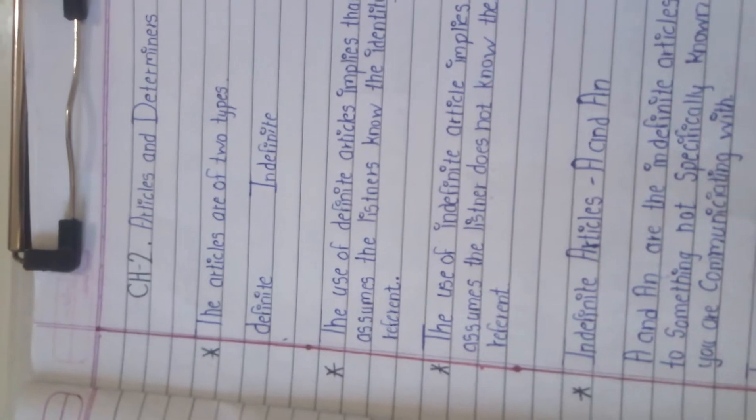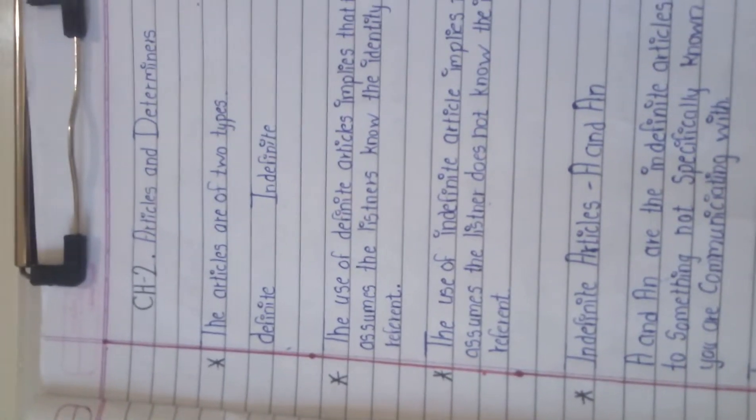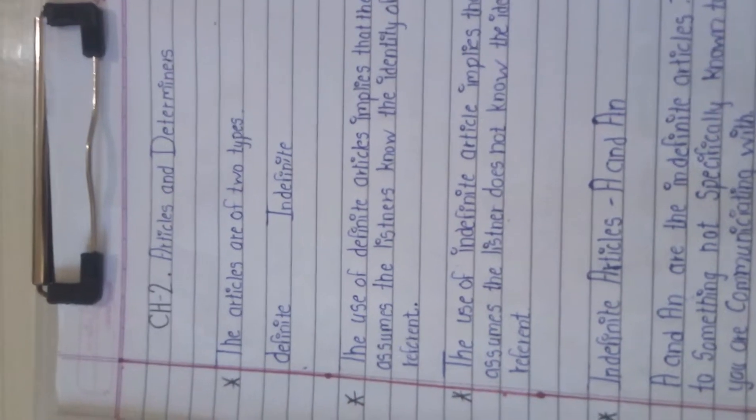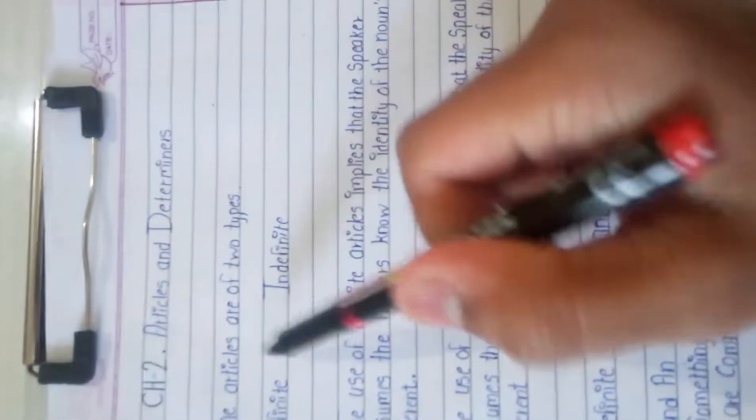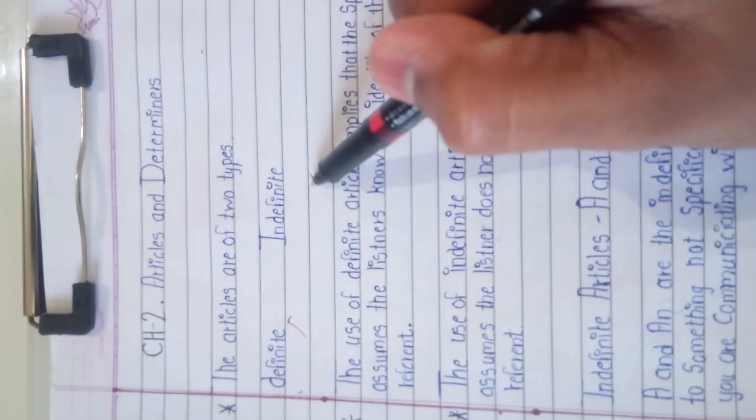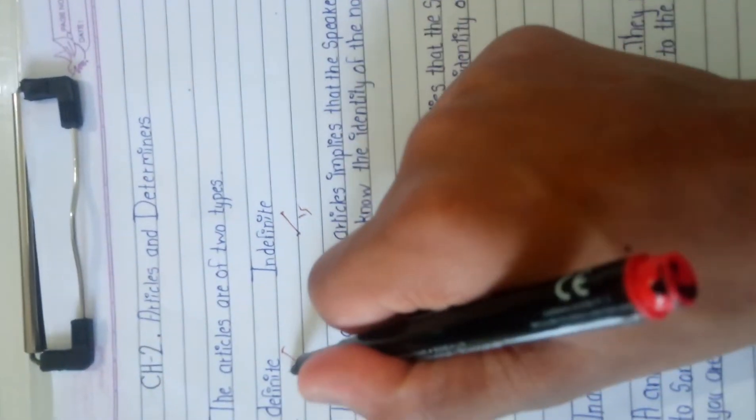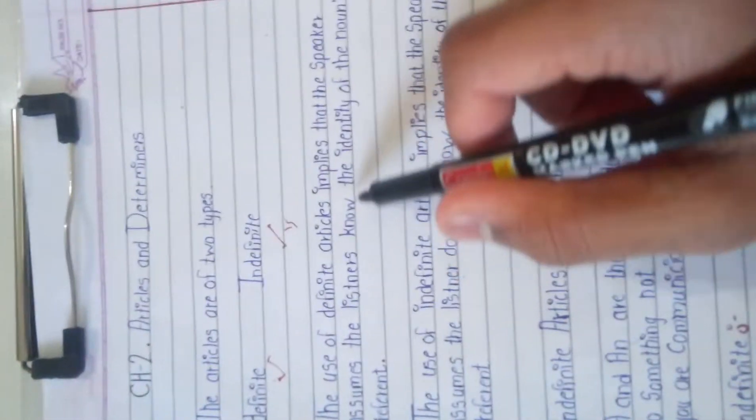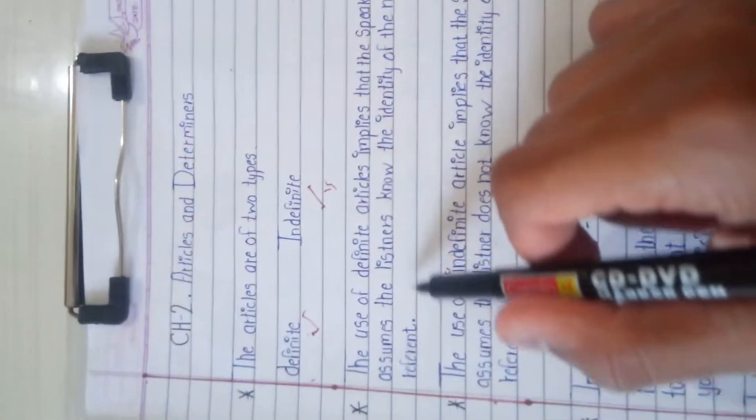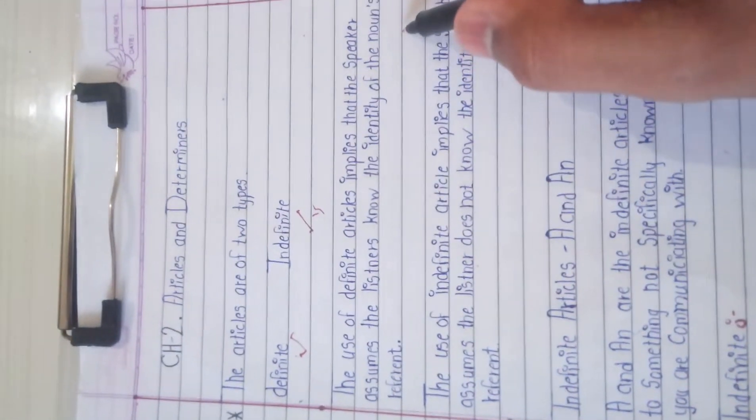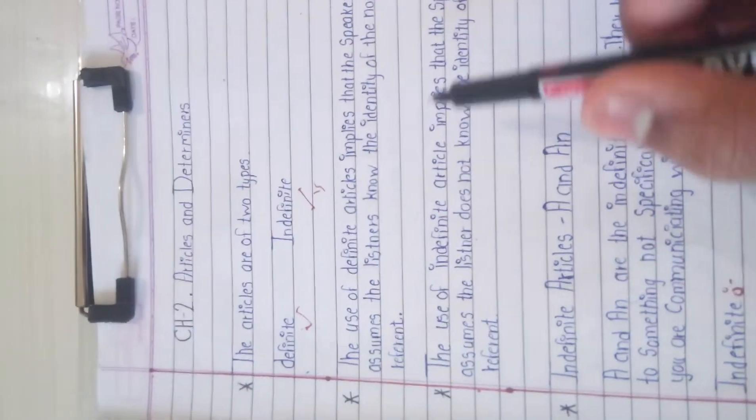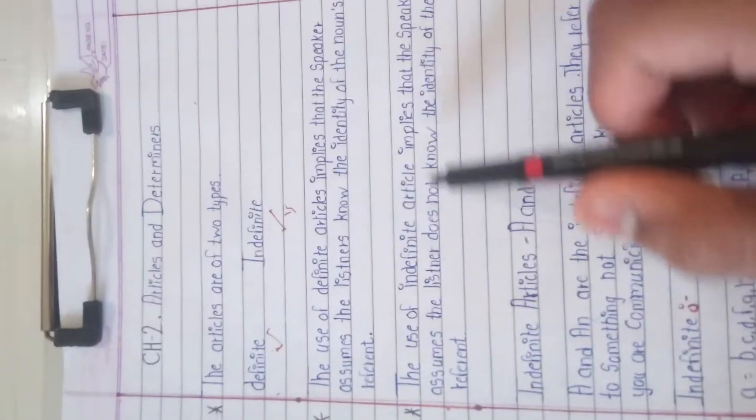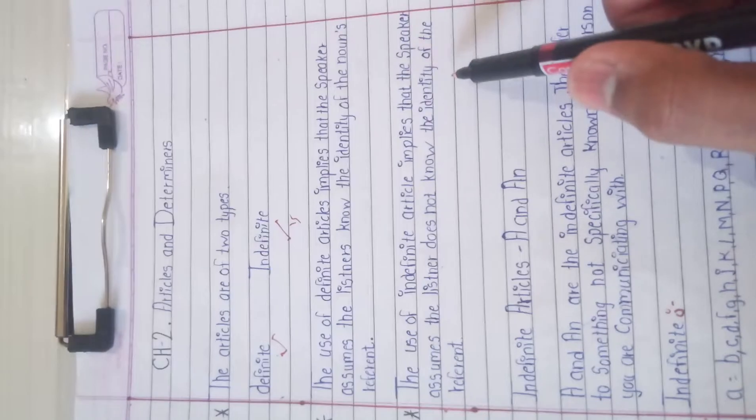Articles are of two types: definite articles and indefinite articles. The use of definite article means the speaker assumes the listener knows the identity of the noun's referent. The use of indefinite articles implies that the speaker assumes the listener does not know the identity of the reference.